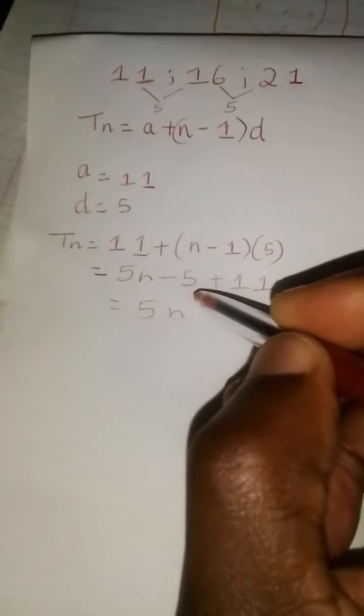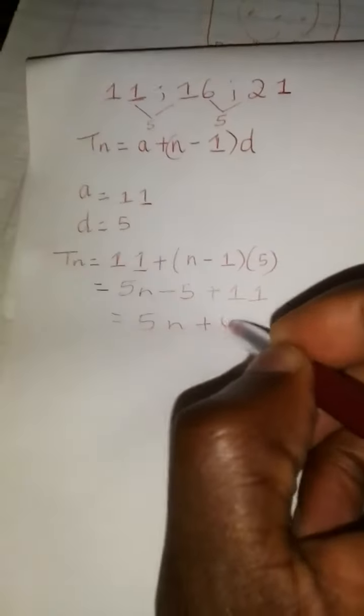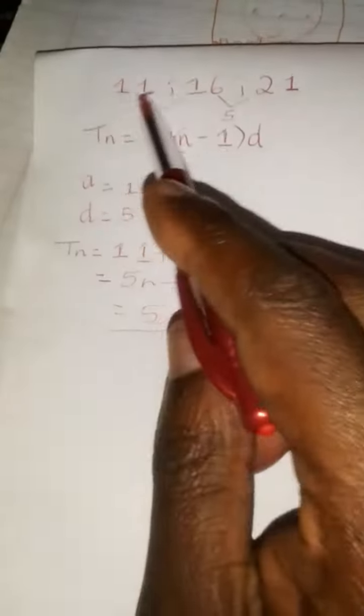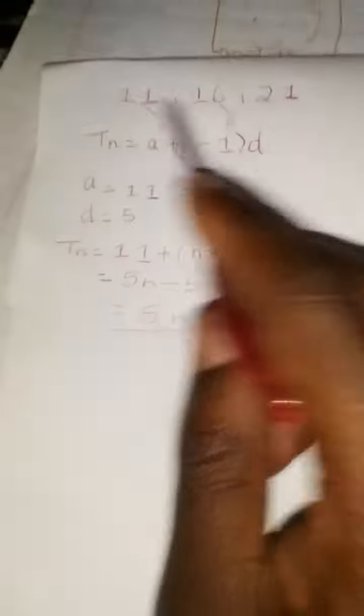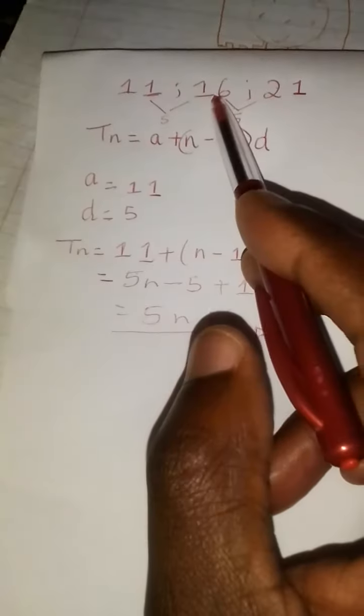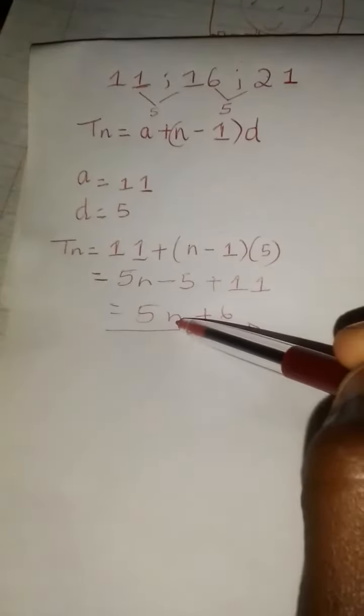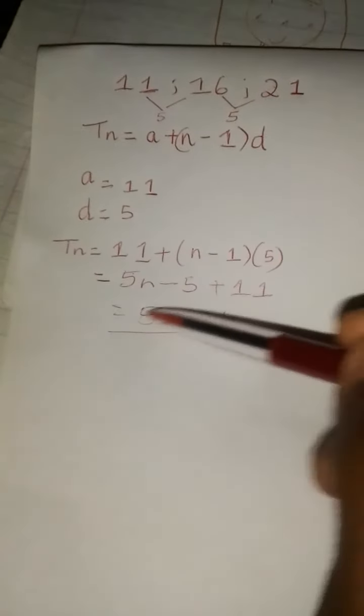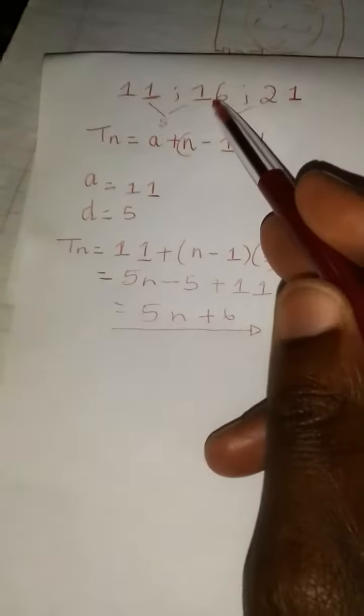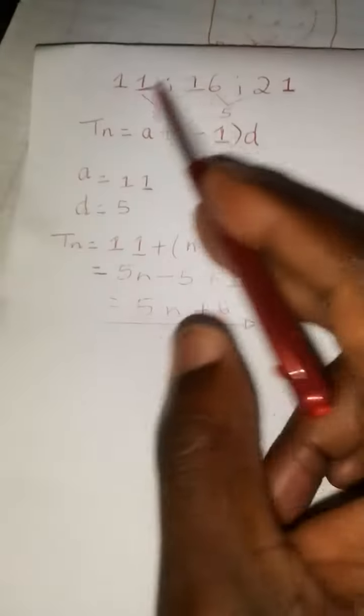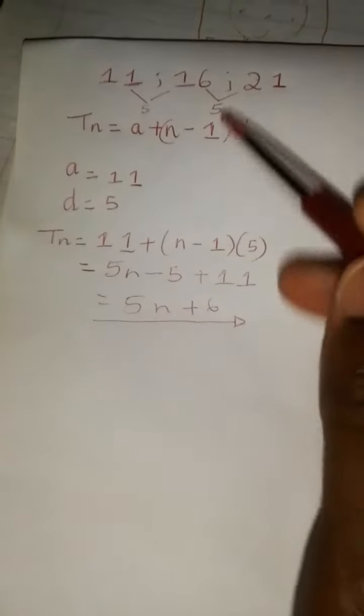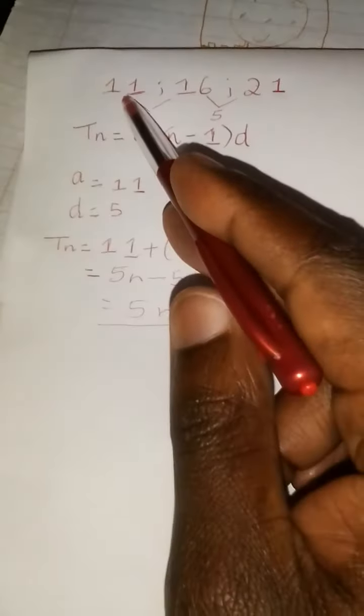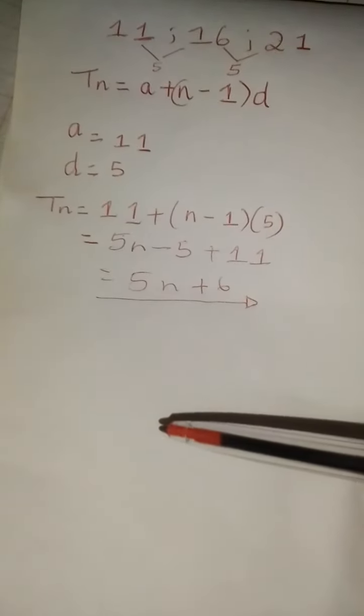And that should give you 5N... 11 minus 5, that's 6. Now you can verify and check using any position in the given pattern. You can check using the second position, 2. Substitute 2 into the formula that you've worked out. If you've worked it out correctly, that should give you a 16. If you substitute 3, which is our third term, it should give you 21. If you substitute 1 for n, that should give you an 11. And that's how we've worked it out correctly.